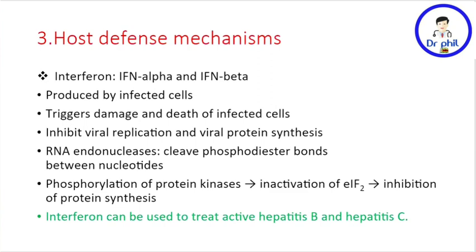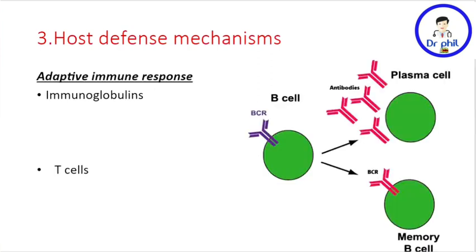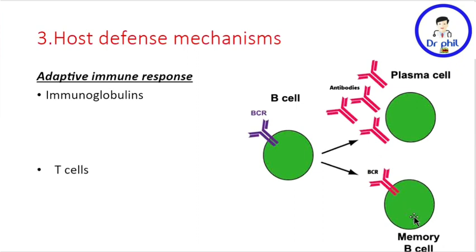Now let's talk about the adaptive immune response. Two important components are immunoglobulins (antibodies) and T cells. Antibodies are produced by plasma cells, which are activated B cells. When B cells are activated, they transform into plasma cells and release antibodies. They can also form memory cells so that when the virus appears again, it will be recognized and attacked early.